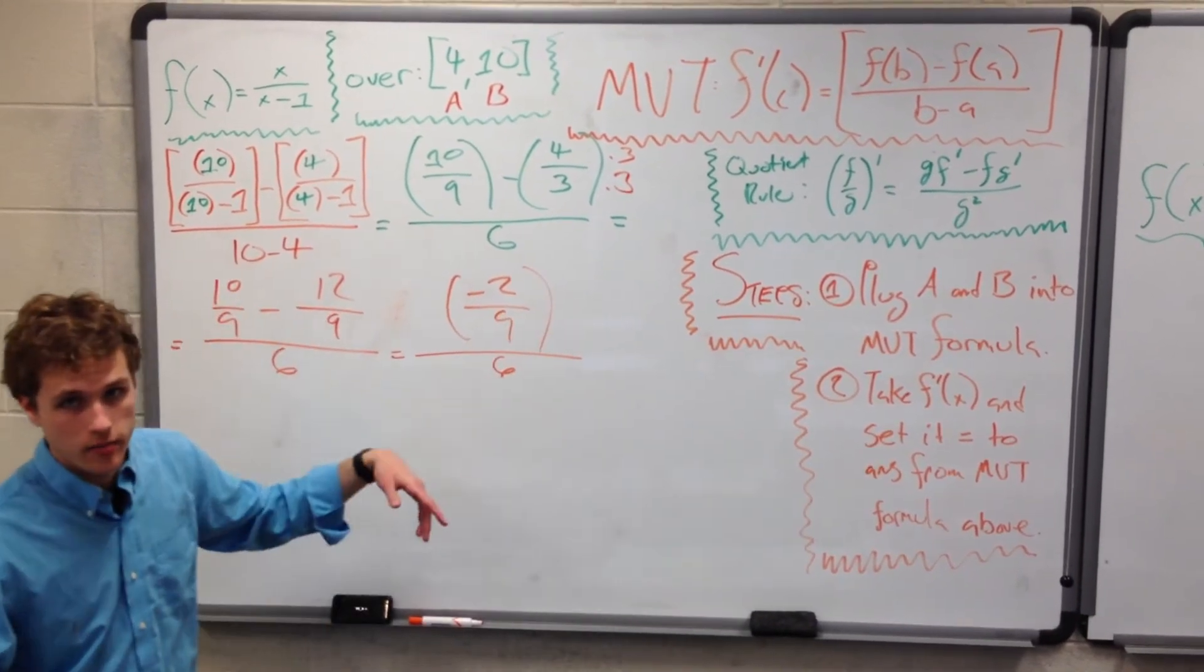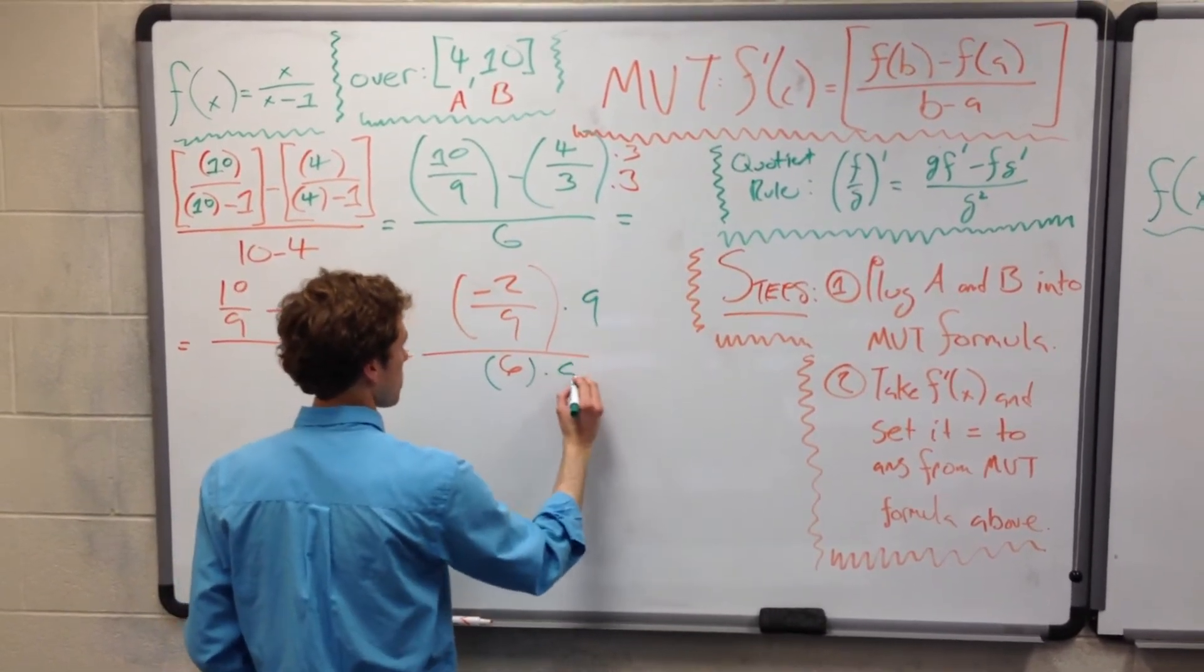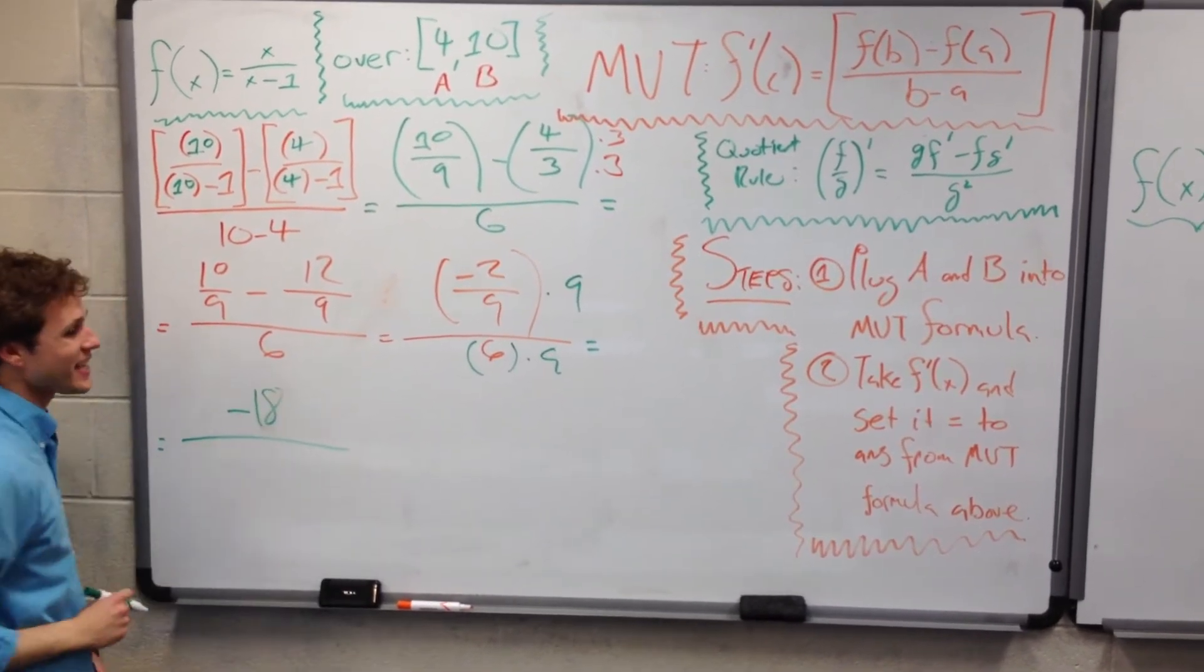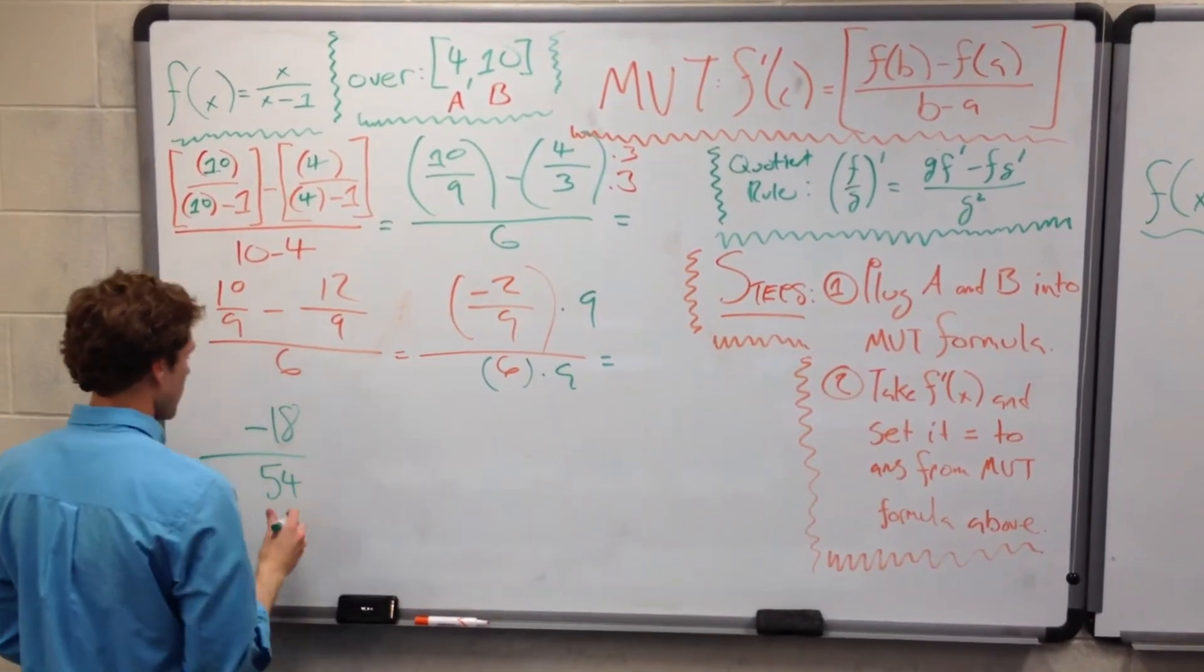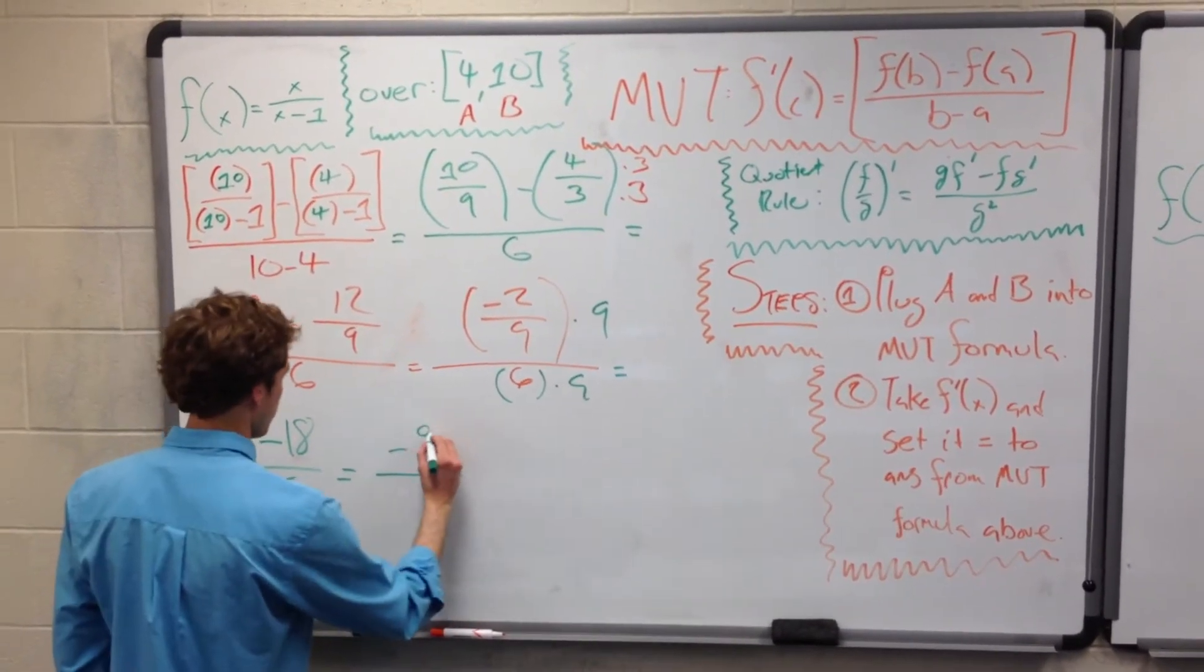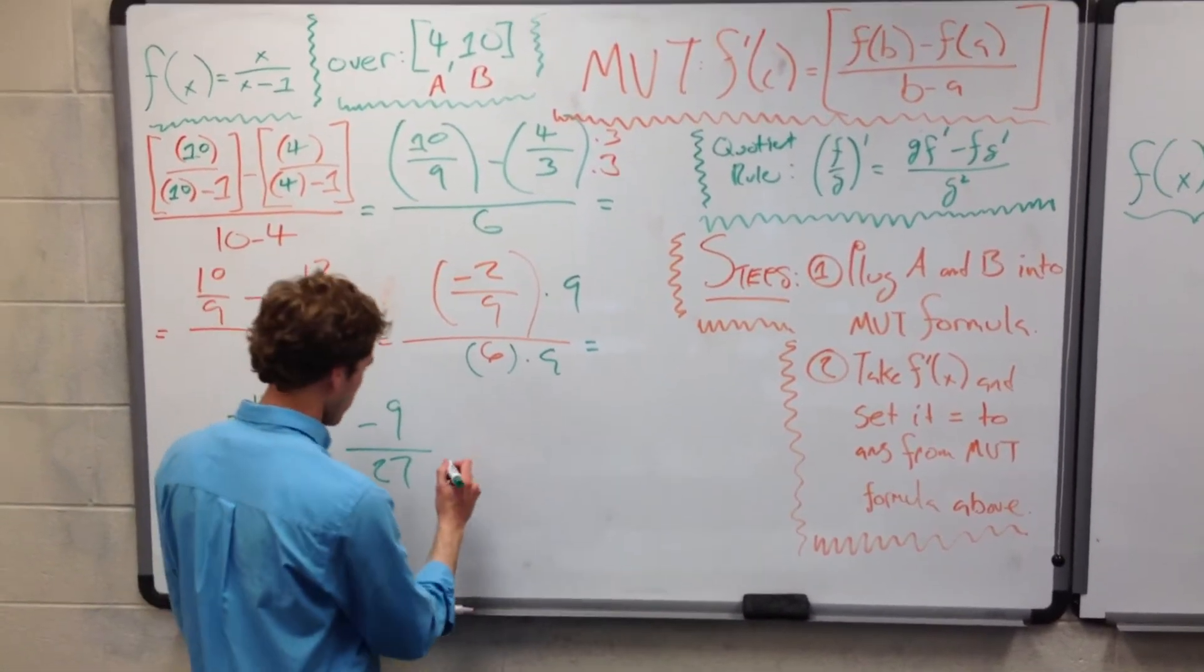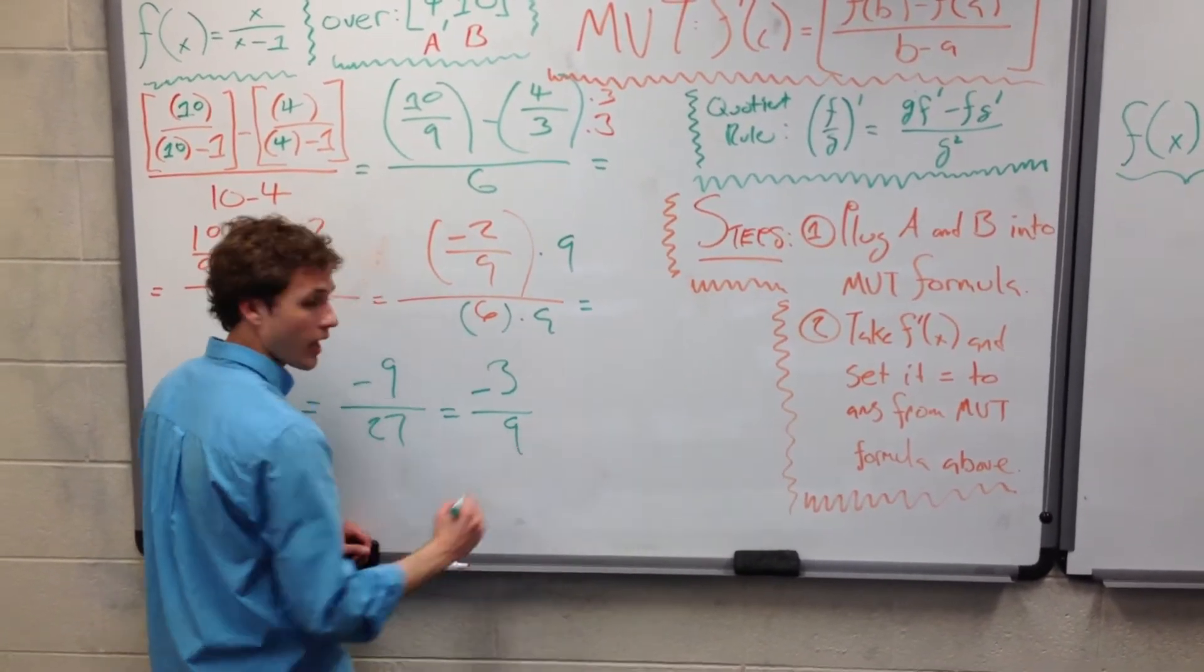And we need to kill this 9 on the bottom because fractions within fractions are just miserable. So let's multiply by 9. 9 times 9, we get rid of the bottom. 9 times negative 2 is negative 18. 6 times 9 is 54. Negative 18 over 54. And now we can reduce this fraction even more. Negative 18 divided by 2 is negative 9, 54 divided by 2 is 27. So we have negative 9 over 27. And we can simplify this even further and say divide each of these by 3 and get negative 3 over 9.